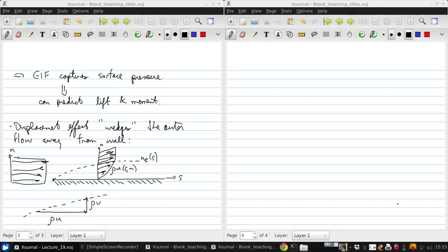So to fix this discrepancy between the lack of normal mass flux in the simple EIF, we could have a non-simple EIF, which would be constructed so that its normal mass flux is that of the real flow outside the boundary layer.